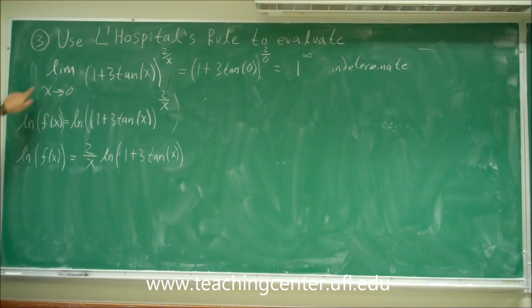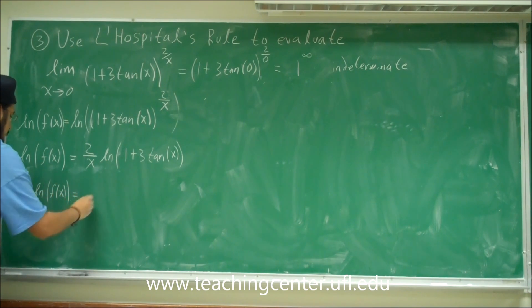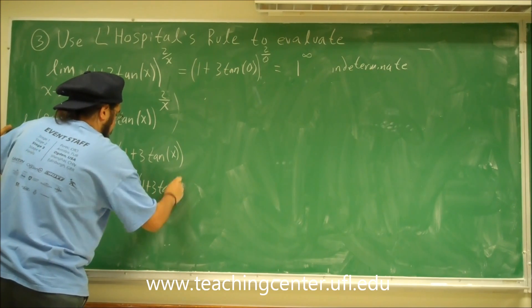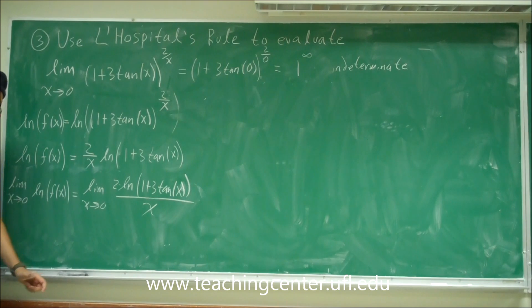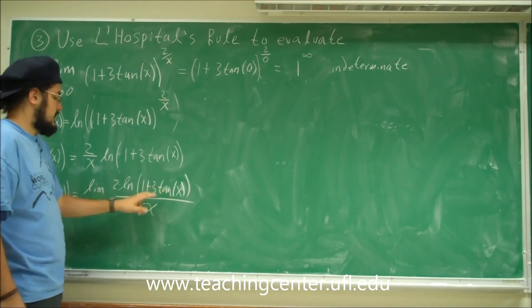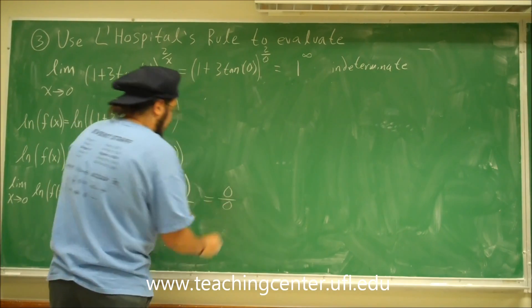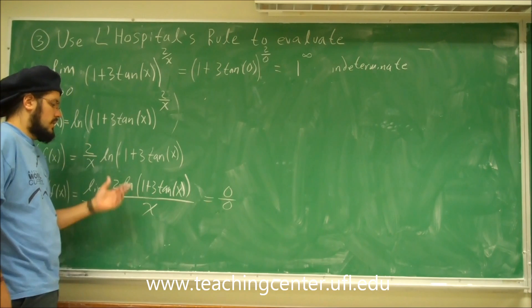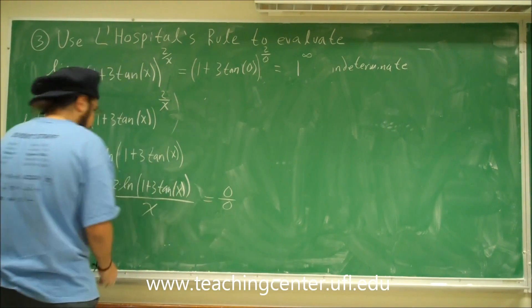I want to take the limit as x approaches 0 of this function. So I take the limit as x approaches 0 of ln of f(x), equal to the limit as x approaches 0 of ln(1 + 3 tan x) divided by x. Plugging in 0: tangent of 0 is 0, so ln(1) = 0 on top, and 0 on the bottom — we get 0 over 0. This is an indeterminate form we can use with L'Hôpital's rule.